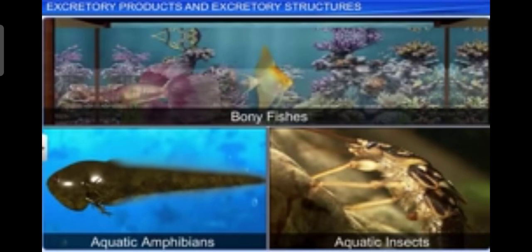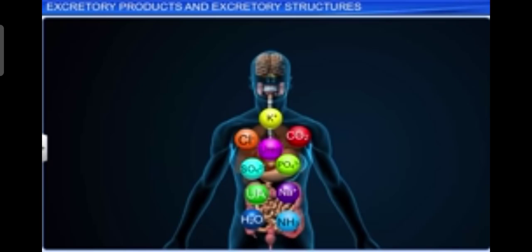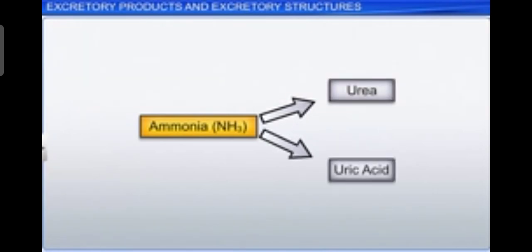Many bony fishes, aquatic amphibians, and aquatic insects are ammonotelic in nature. Ammonia, as it is highly soluble, is generally excreted by diffusion across the body surface or through gill surfaces in fish as ammonium ions. Kidneys do not play any significant role in removal of ammonia, and this ammonia is converted into urea and uric acid.